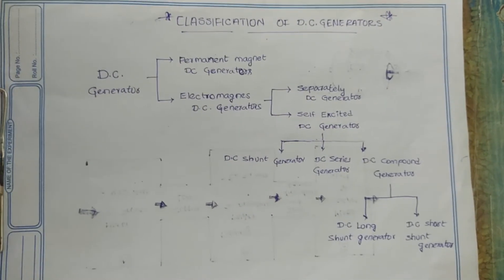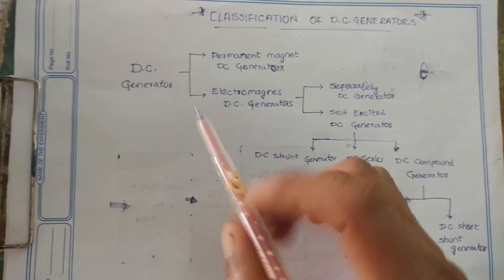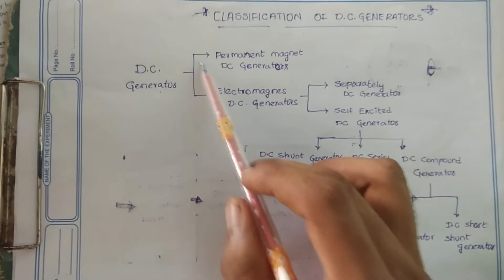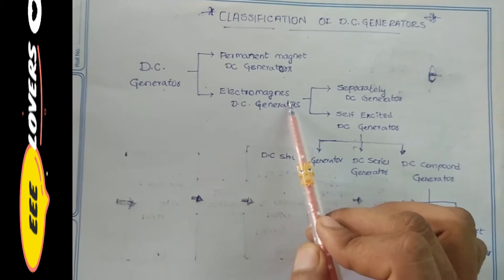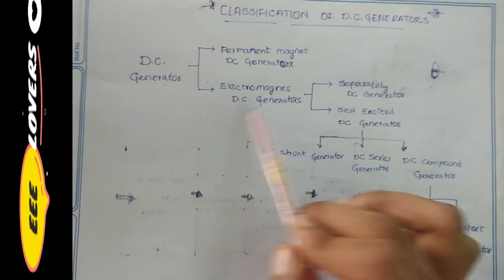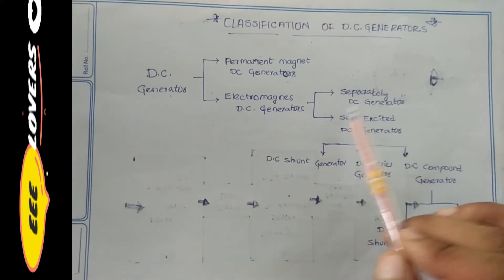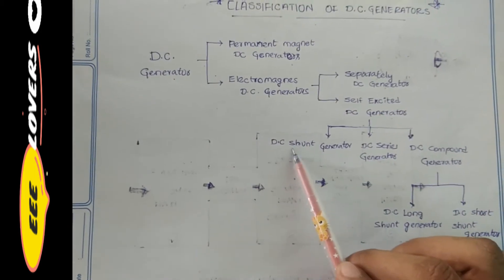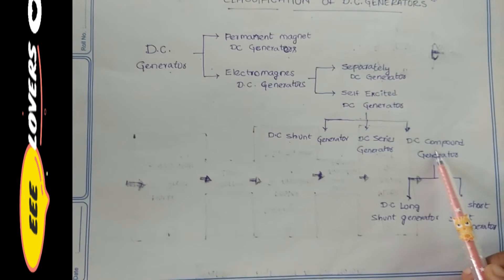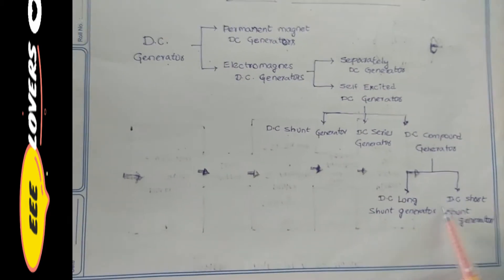Hello friends, welcome to the 3D Lovers. Today we are going to discuss DC generator classification. DC generators are classified into two types: permanent magnet DC generators and electromagnetic DC generators. Electromagnetic DC generators are classified into two types: separately excited and self-excited. Self-excited DC generators are classified into three categories: DC shunt generator, DC series generator, and DC compound generator. The DC compound generator is classified into two types: DC long shunt generator and DC short shunt generator.